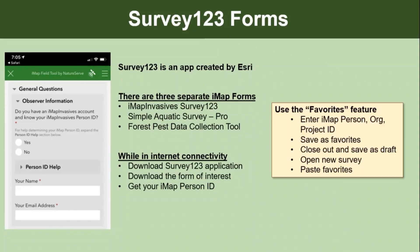One key tip before talking about any of the Survey 123 forms: using the favorites feature is super helpful. You can enter information like your person ID, your name, and your organization — instead of having to remember and retype it every time, you can save it as favorite answers and paste those in every time you do a survey. This saves a ton of time on the data collector's side and also helps with data quality — if you type it right the first time and save it, you can have it correct for the rest of the surveys you submit.